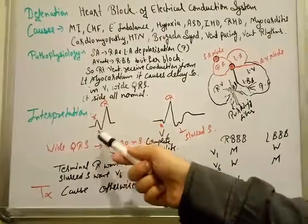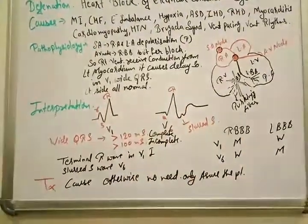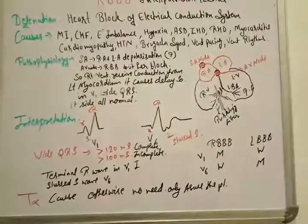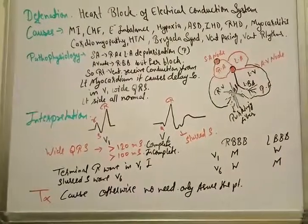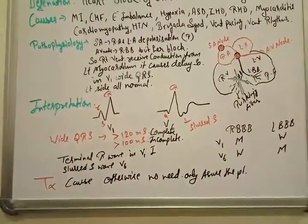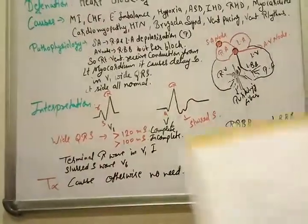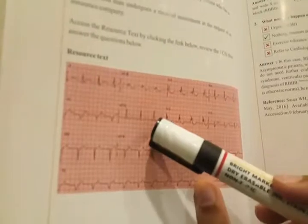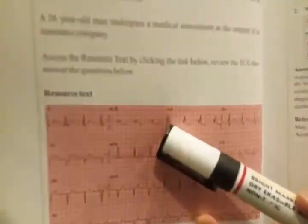So remember this one. I am going to explain the ECG now. This ECG will help you understand how to interpret right bundle branch blocks. So see, this is the ECG in the book. This is V1. I hope it's visible.